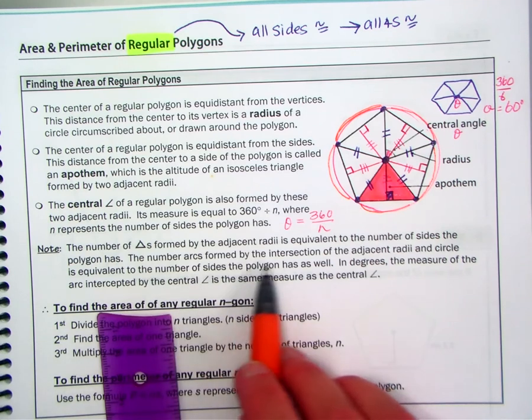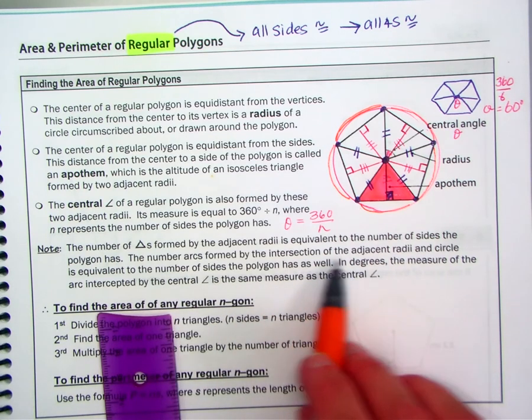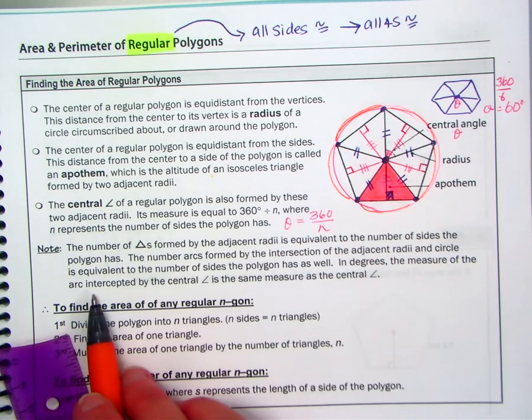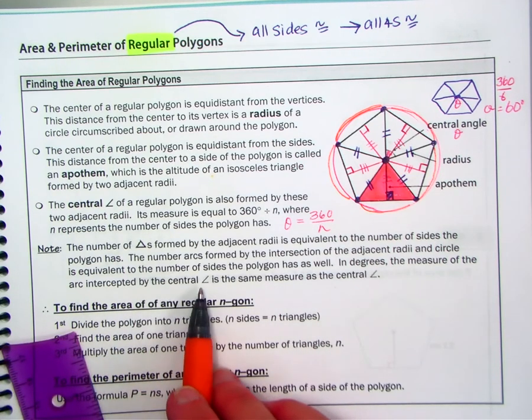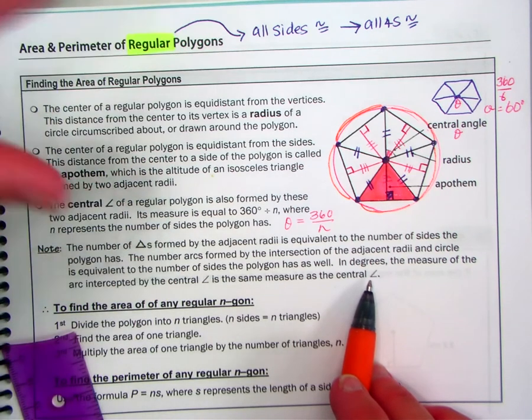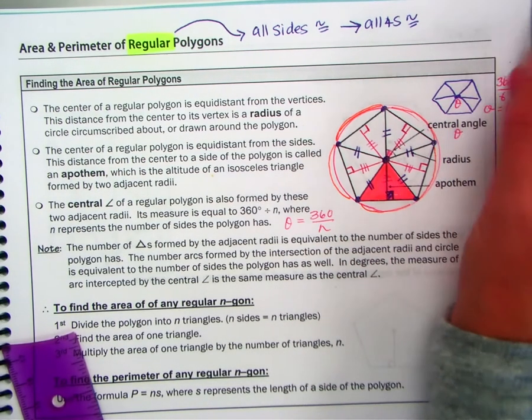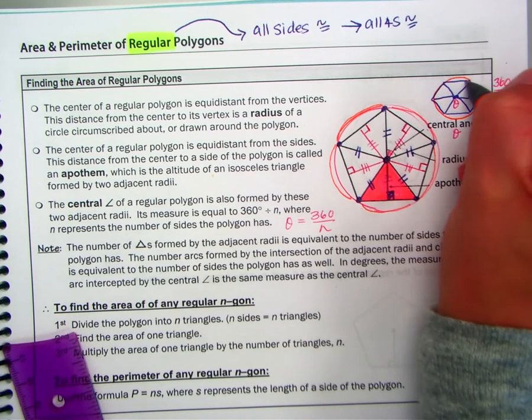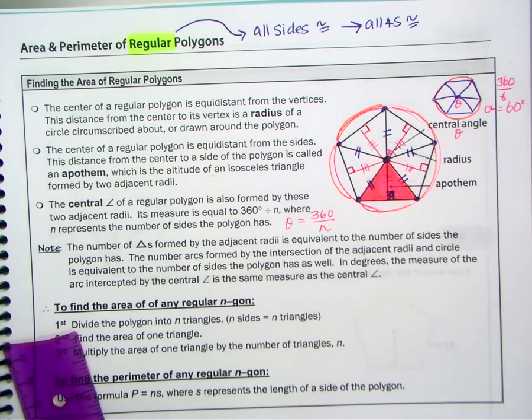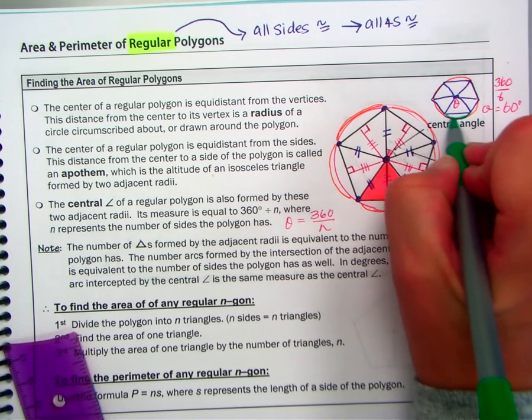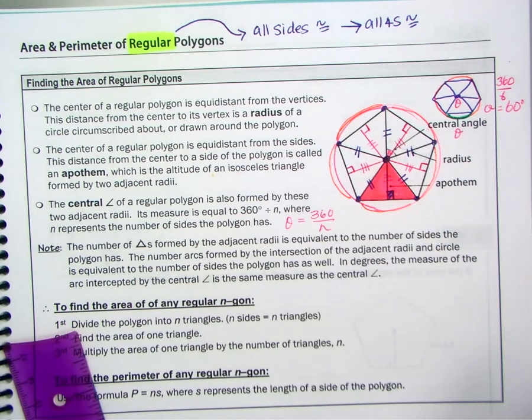The number of arcs formed is equivalent to the number of sides as well. So in degrees, the measure of the arc intercepted by the central angle is the same as the measure of the central angle. Well, if I were to draw the circle here, these six arcs, and this arc right here, I'll highlight that in green, would also be 60 degrees. And we'll talk more about this later on.